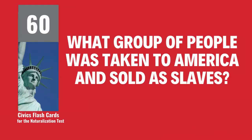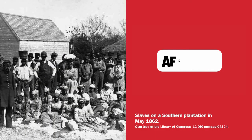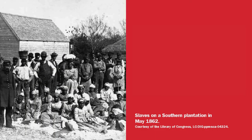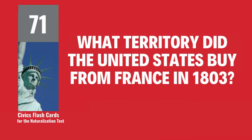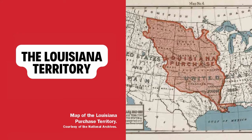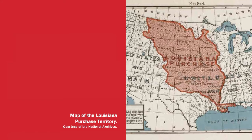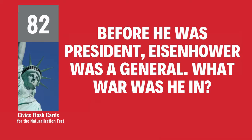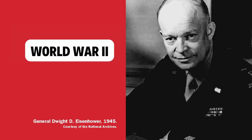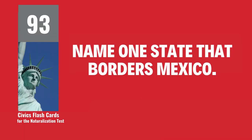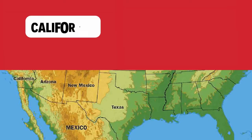What group of people was taken to America and sold as slaves? Africans. What territory did the United States buy from France in 1803? The Louisiana Territory. Before he was president, Eisenhower was a general. What war was he in? World War II. Name one state that borders Mexico. California.